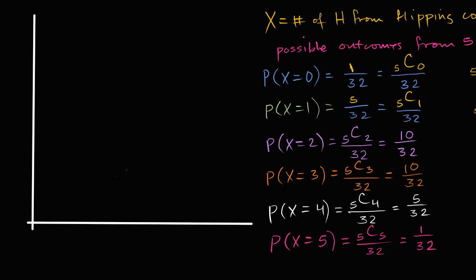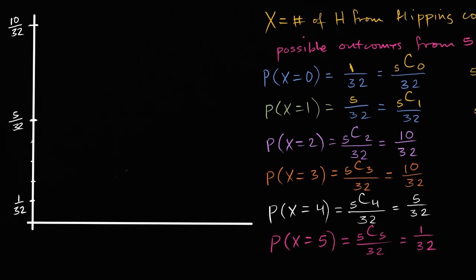Let's see what the probabilities are. It's all going to be in terms of 32nds, and we get as high as 10/32. So this right over here is 10/32. Halfway up, we have 5/32. And 1/32 would be about one-fifth of the way up. So this is 1/32 right over here. This axis shows the probability, and the other axis shows the values the random variable can take on.